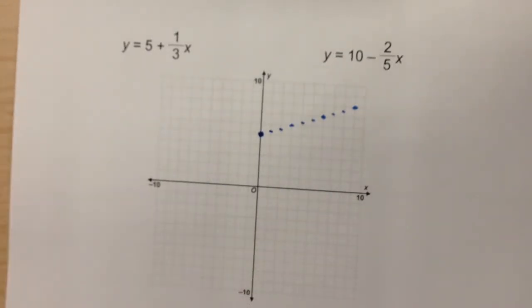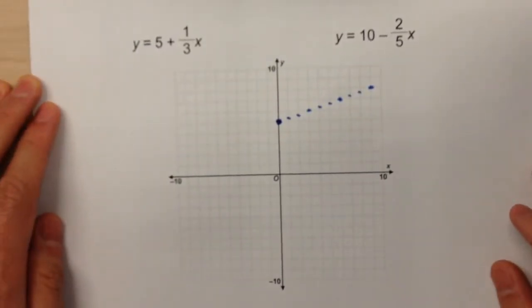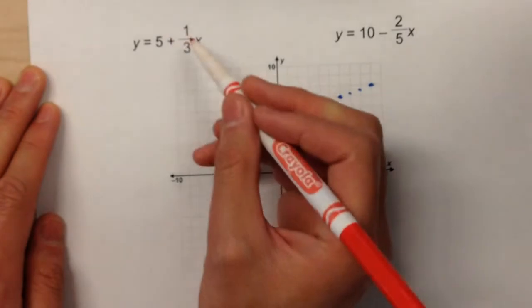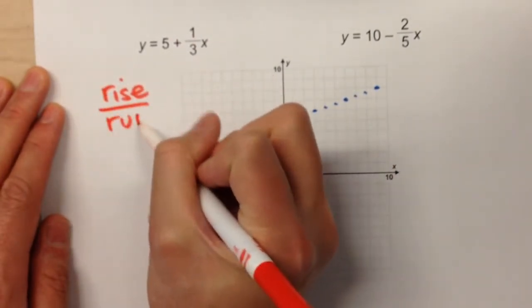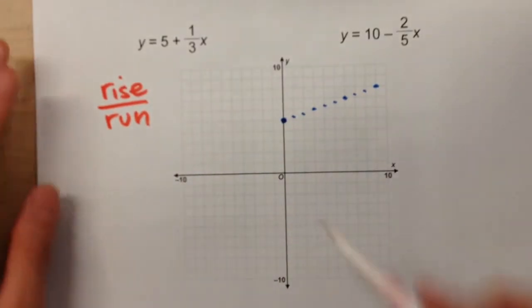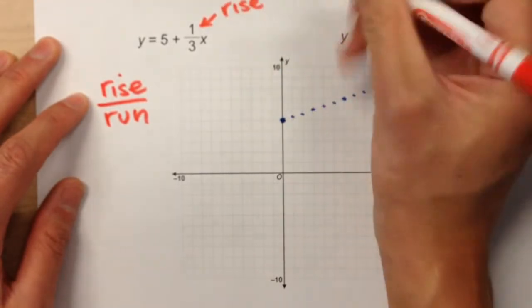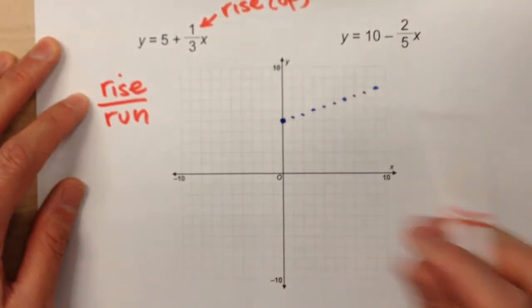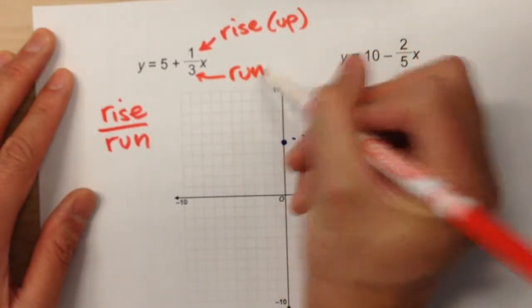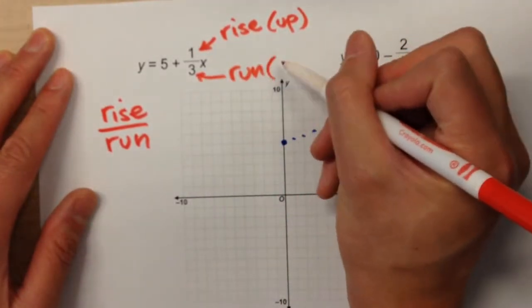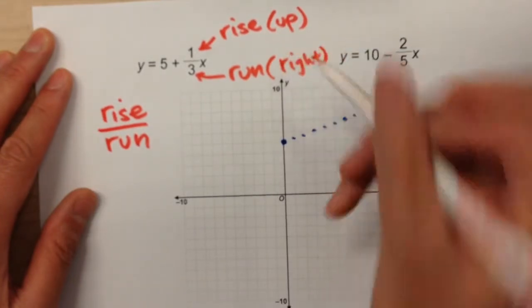So we talked about a little way, a little shortcut, a trick to graphing slopes with fractions. And it goes with this little phrase: rise over run. So when your slope is a fraction, the number on top is your rise. That's how much up, how many squares up you have to go. The number on the bottom is your run. That's how many steps to the right you have to go.